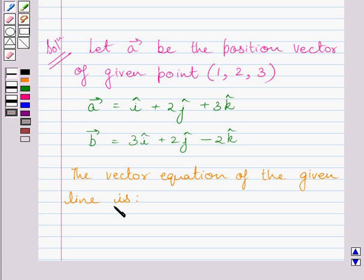Now using the key idea, we get the vector equation of the given line is r vector equals a vector plus lambda multiplied by b vector.